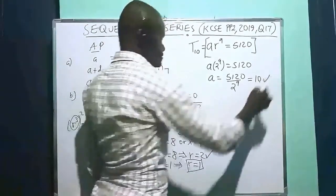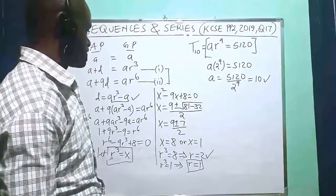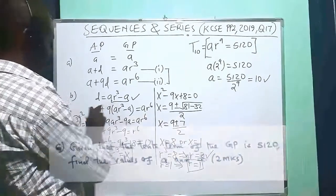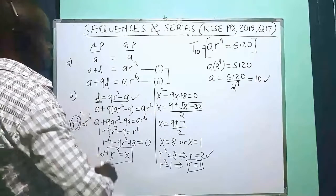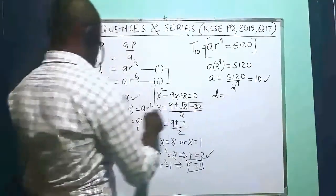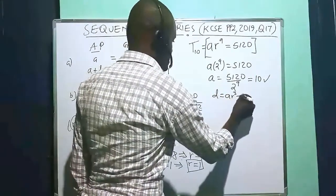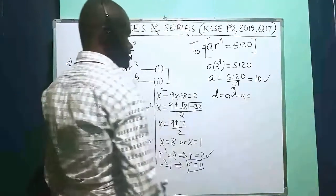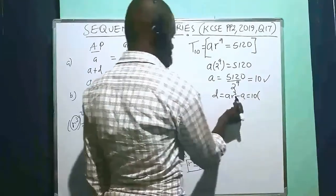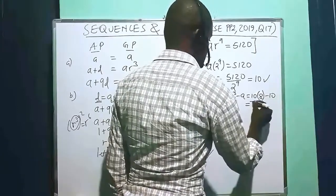Now that A is 10, we also need the value of D. Returning to the earlier equation D equals A·R³ minus A. Substituting A equals 10 and R equals 2, we get D equals 10 times 2³ minus 10, which is 10 times 8 minus 10, giving D equals 80 minus 10 equals 70.